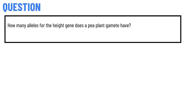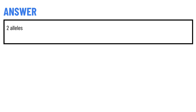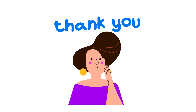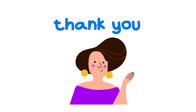Our today's question is: How many alleles for the height gene does a pea plant gamete have? The correct answer of the question is 2 alleles. So that's the correct answer of the question.